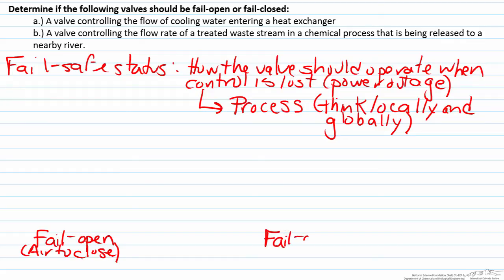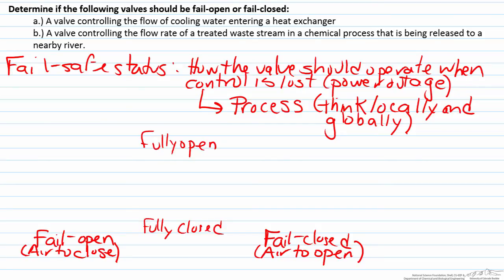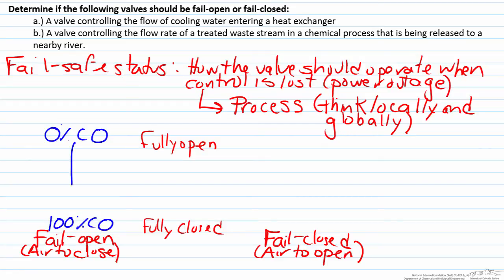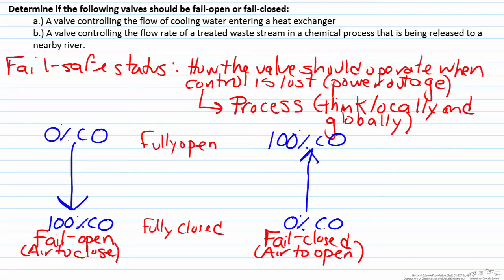The second option is a fail closed valve, also known as an air to open valve. For a fail open valve, we want zero percent controller output to correspond to the valve being fully open, because if all power is lost the controller defaults to zero percent. A hundred percent controller output corresponds to fully closed, so controller output increases as the valve closes more. For a fail closed valve the opposite is the case: zero percent controller output means fully closed, and a hundred percent means fully open — an increase in controller output opens the valve further.